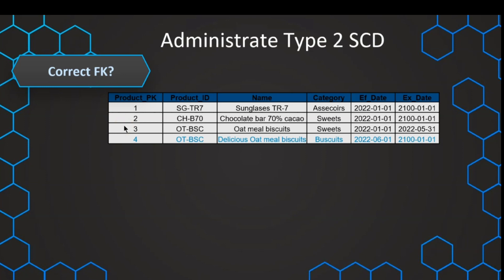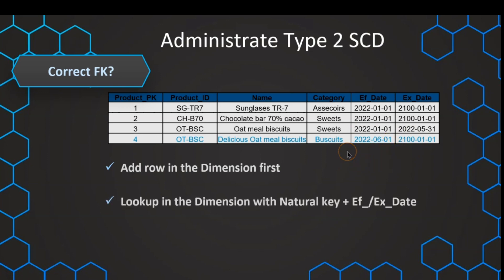The approach, broken down simply: first, as we've learned, add the new row in our dimension with the effective date and expiration date. Then we need a lookup in the dimension. To find the correct foreign key, we use the natural key, and additionally we need to find out what the current value is. For example, if the ETL runs today on the 1st of June 2023, the current date falls between the effective date and expiration date only for row number four. Therefore, this is the current value and the correct foreign key to use in the fact table.